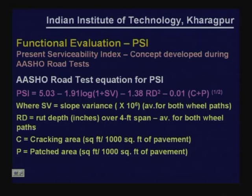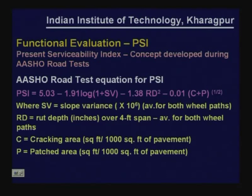The present serviceability index is a concept developed during the AASHTO road test. The AASHTO equation correlates PSI with surface characteristics such as slope variance, which gives an indication of variance of the surface profile in the longitudinal direction, and rut depth for flexible pavement. For concrete pavement, both cracking area and patched area expressed in square feet per 1000 square feet of paved area are used. So PSI for flexible pavement is mainly in terms of surface profile, rut depth, cracking, and patching.